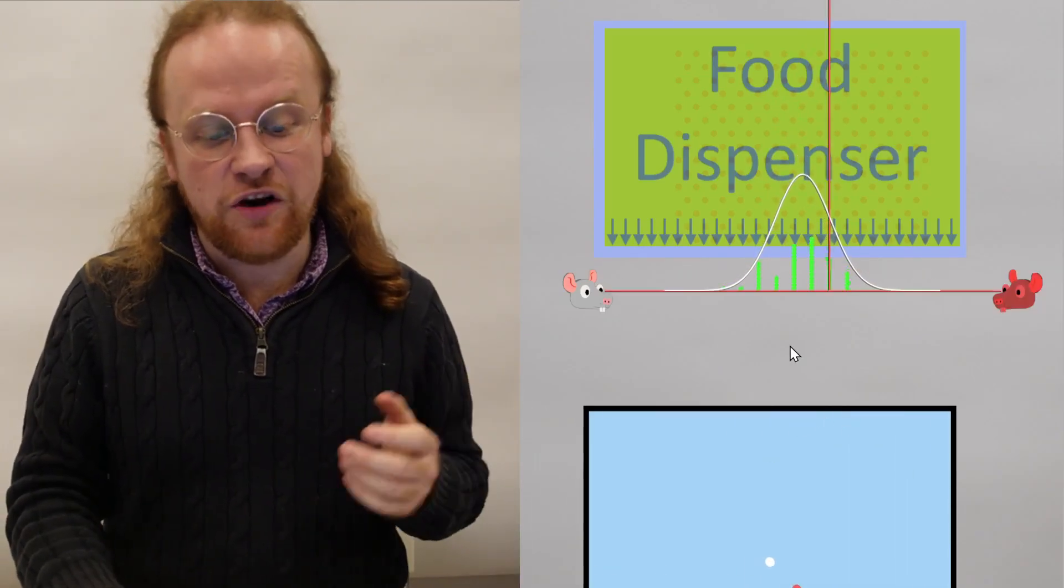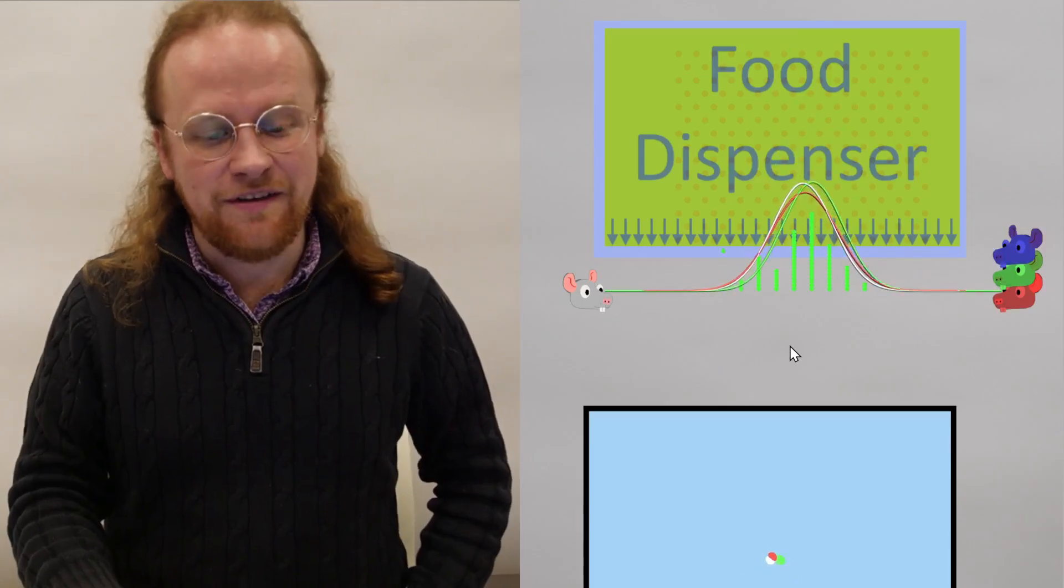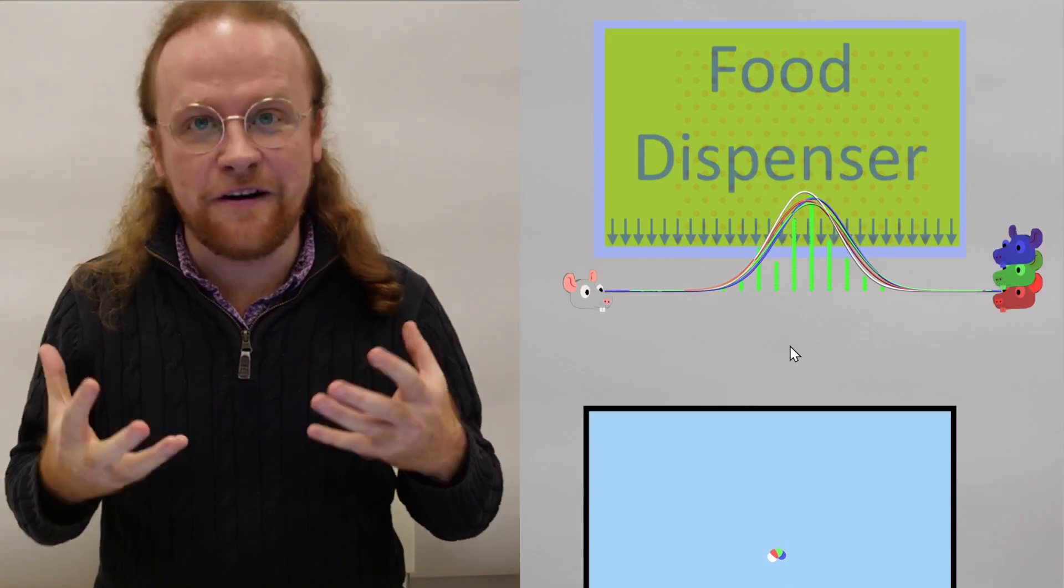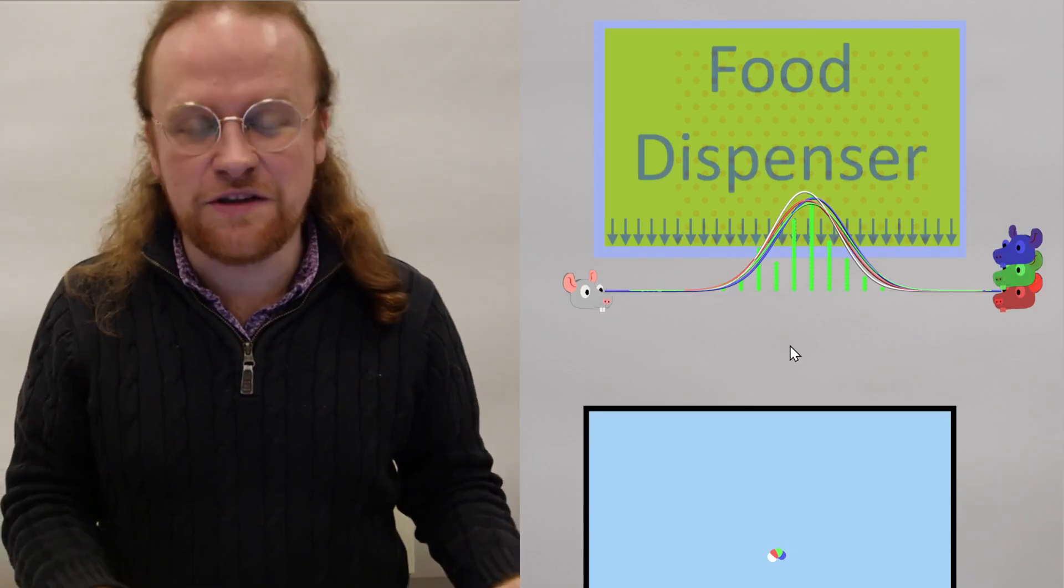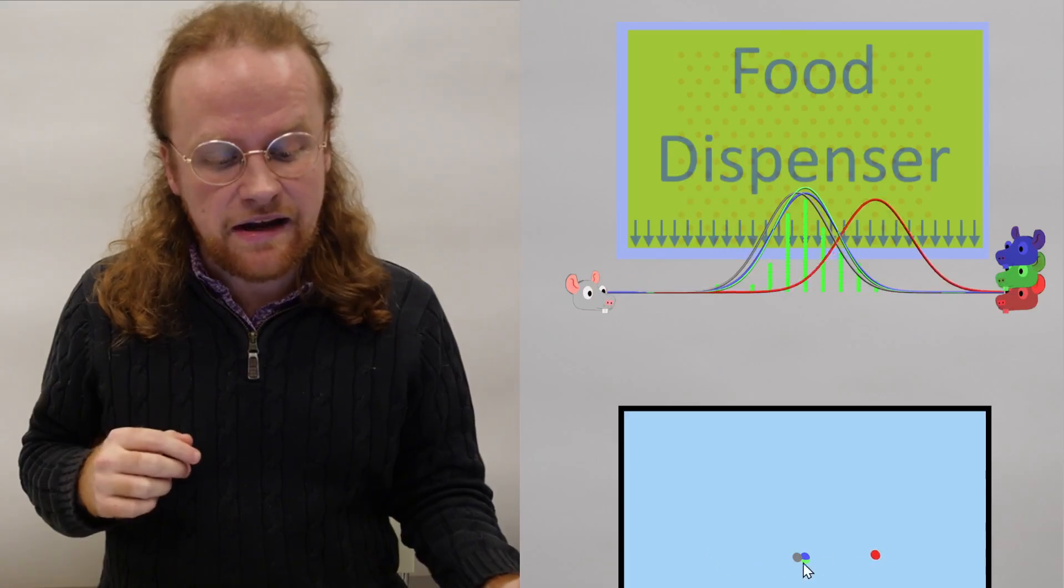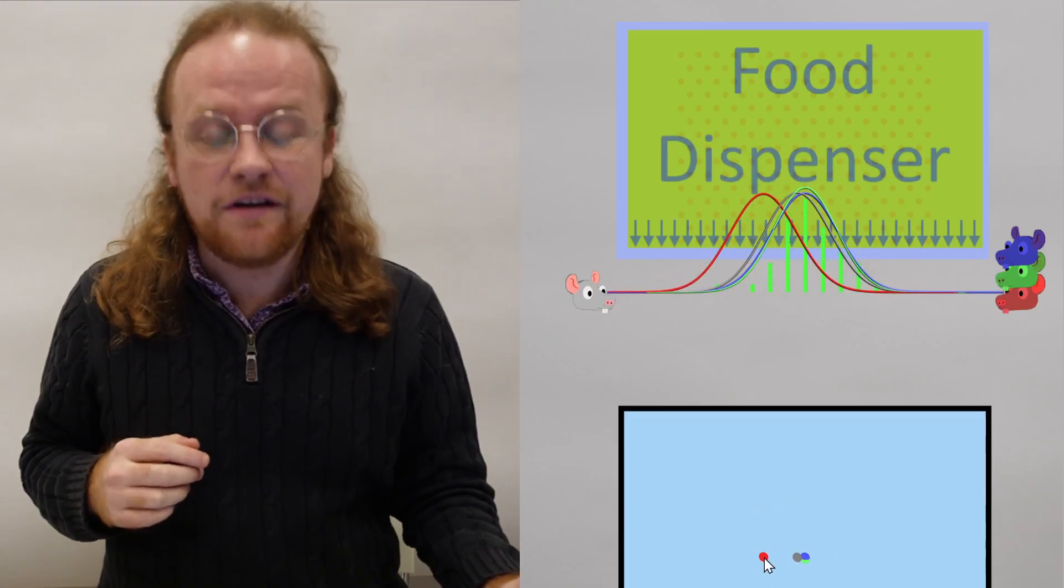If a bunch of other rats show up, they have their own beliefs about what's going to happen and these beliefs will converge eventually on a very accurate idea of where the next piece of food will come out. The rats are assuming that the food is falling with a certain mean and a certain standard deviation—a Gaussian distribution, we say.